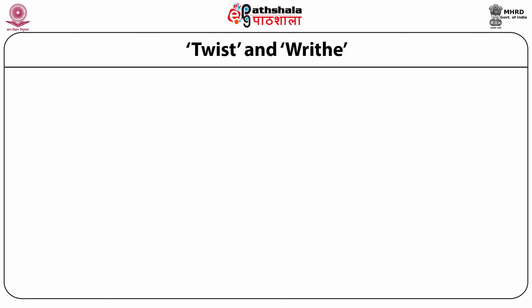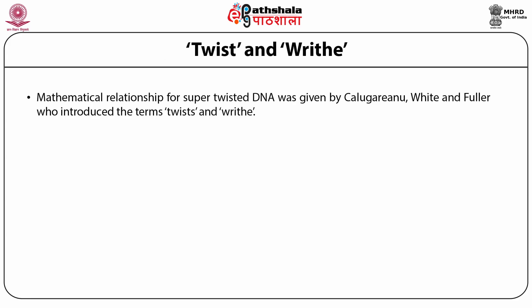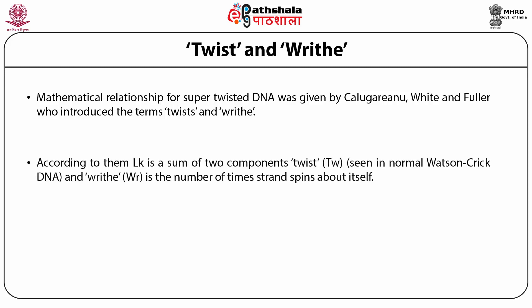What is twist and writhe? The mathematical relationship for super-twisted DNA was given by Calugareanu, White, and Fuller, who introduced the terms twist and writhe. According to them, LK is a sum of two components: twist Tw, seen in normal Watson-Crick DNA, and writhe Wr, which is the number of times the strand spins about itself. So LK equals Tw plus Wr.